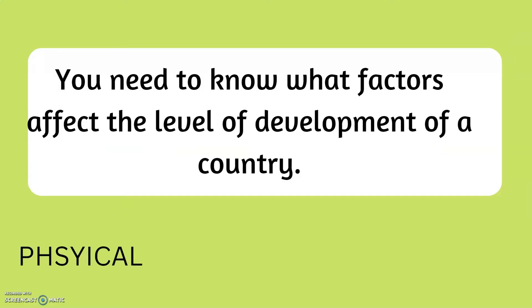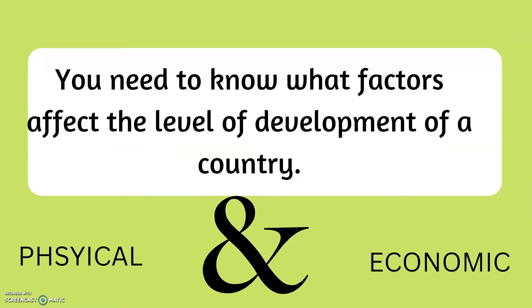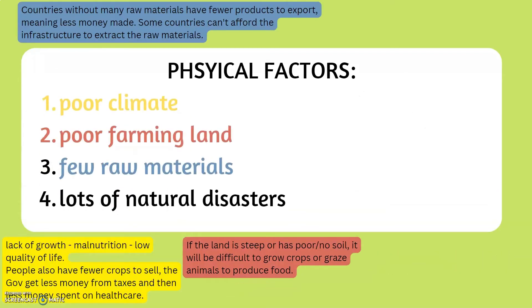There are two types of factors: physical and economic. Physical factors include poor climate, poor farming land, few raw materials, and lots of natural disasters.